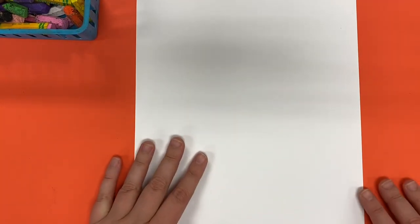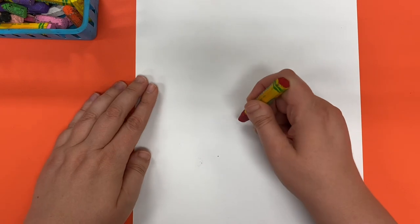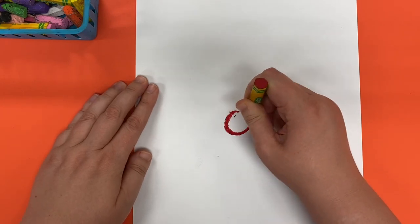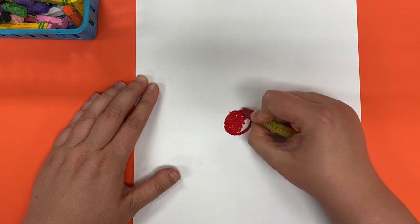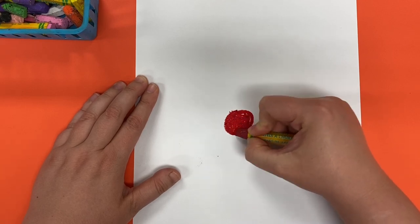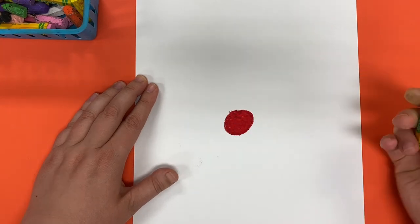The first step for that is on our paper we need to pick a color and we need to draw a circle right in the middle of the paper. And then we're going to color it by pressing down hard. We want to fill that circle in all the way so that there are no white spaces showing.